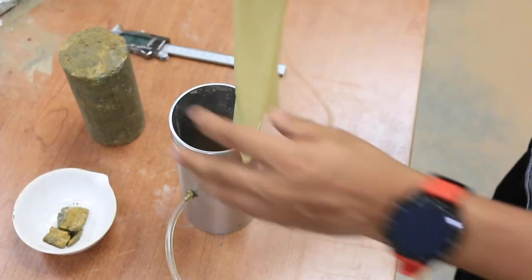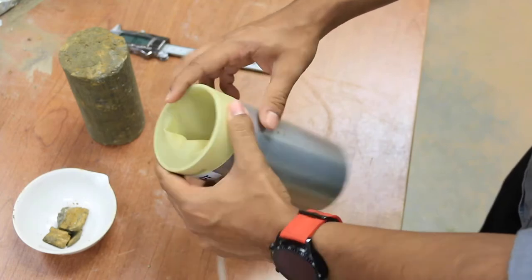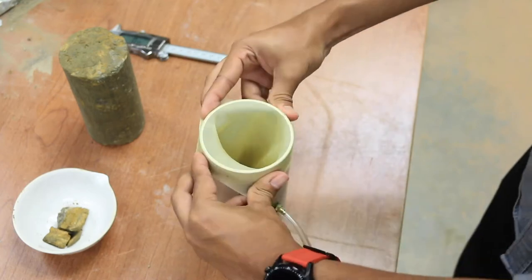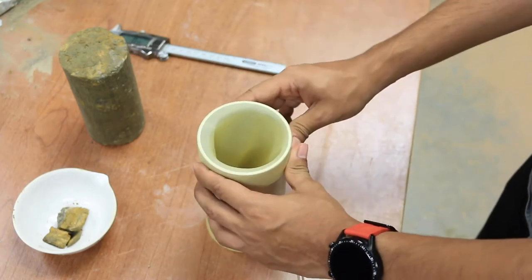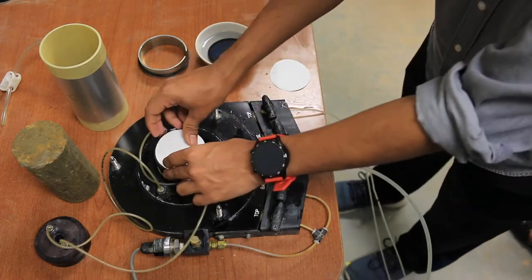Put a latex membrane in a membrane stretcher. The soil sample needs to be placed inside the latex membrane. Apply suction in the membrane stretcher so that the rubber membrane will be attached to the surrounding. Put filter paper and porous stone both above and below the soil sample.